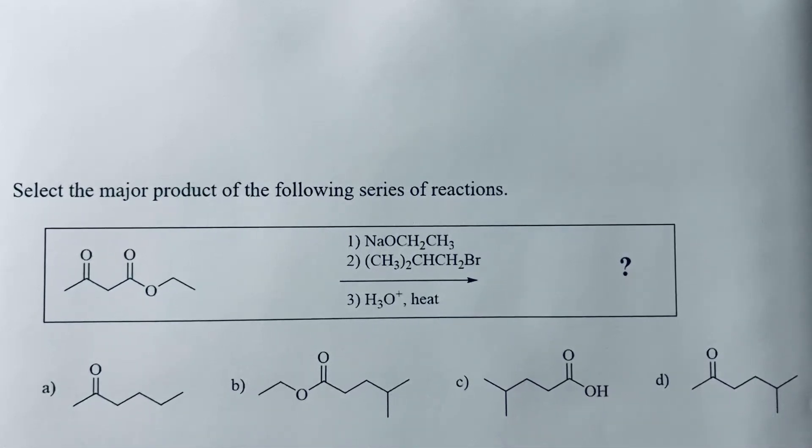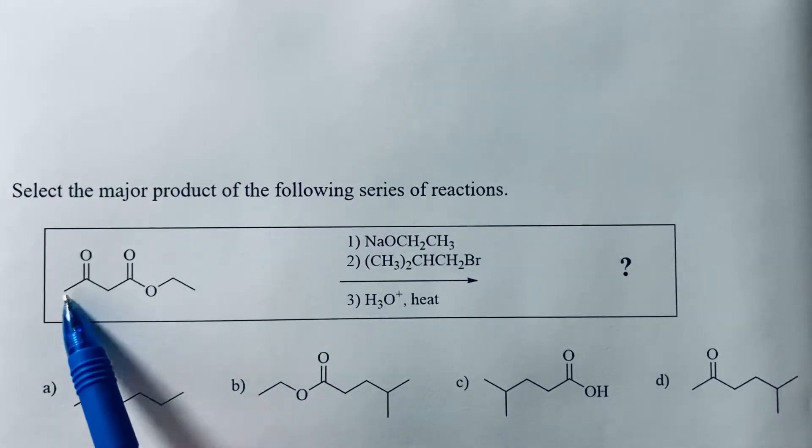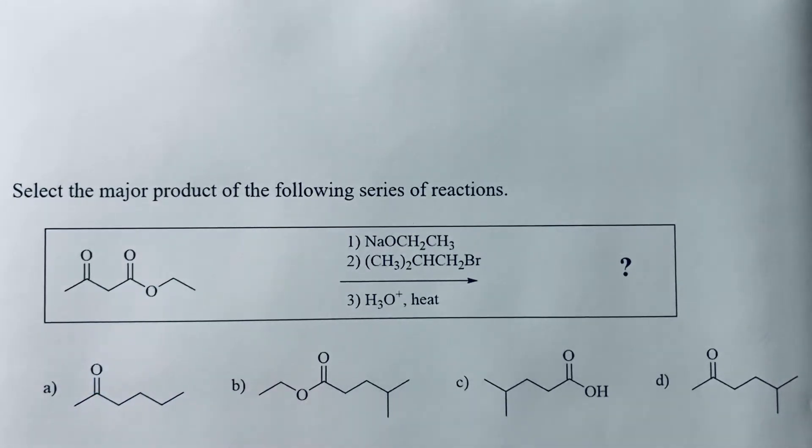Select the major product of the following series of reactions. If we look at our starting material, we have a ketone and we have an ester.